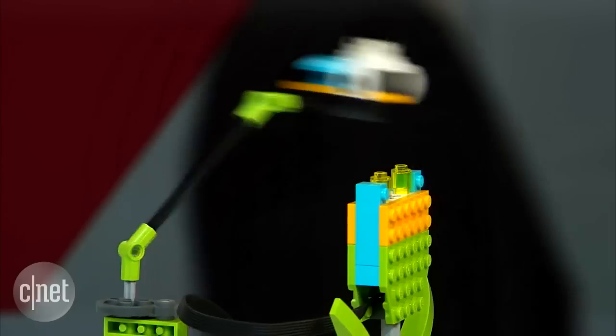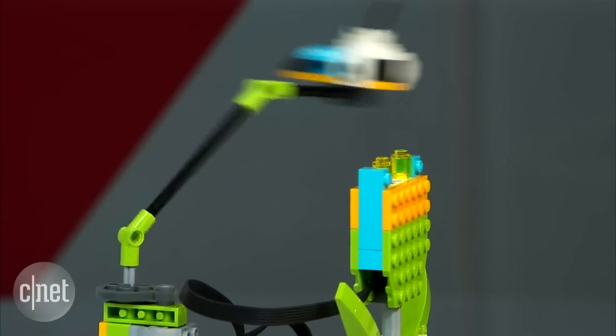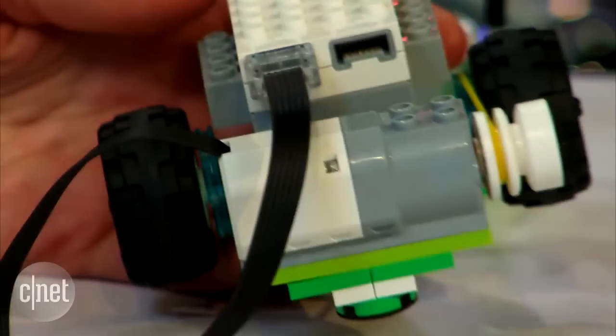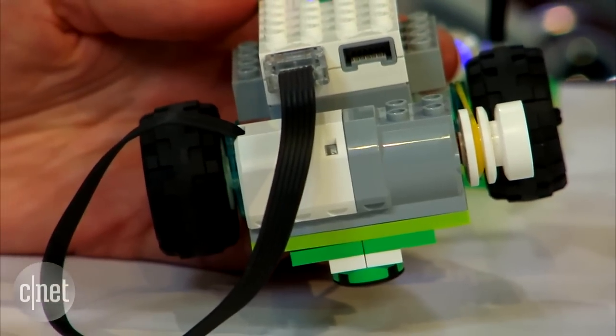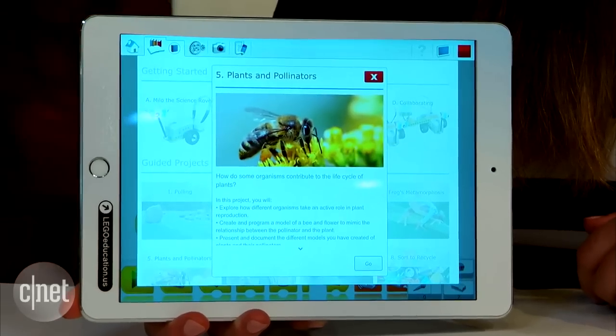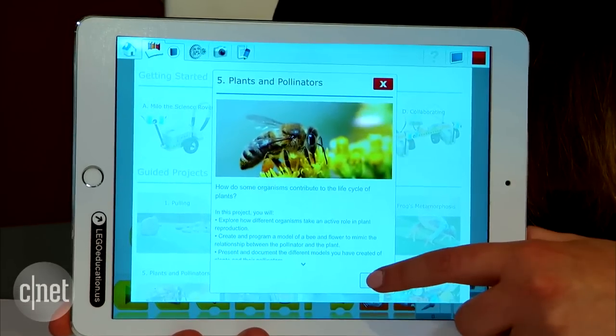One is an IR sensor and the other one is a tilt sensor. Start up the app and then you can configure these units in different ways depending on the scenario that you want to teach the child. For example, you have topics like plants and pollination, forces and motion, and also recycling.